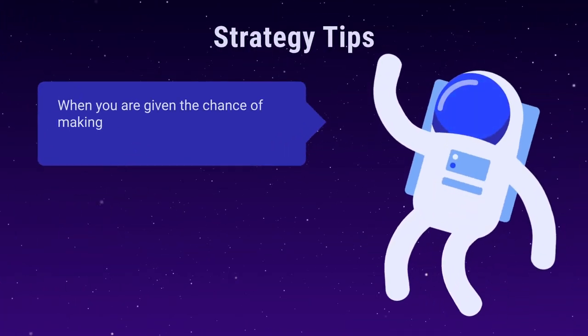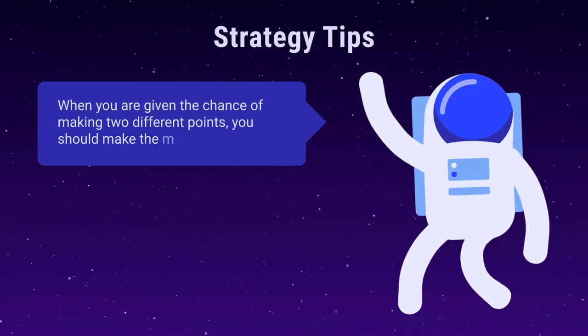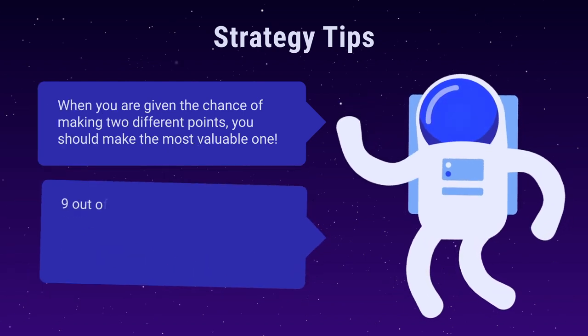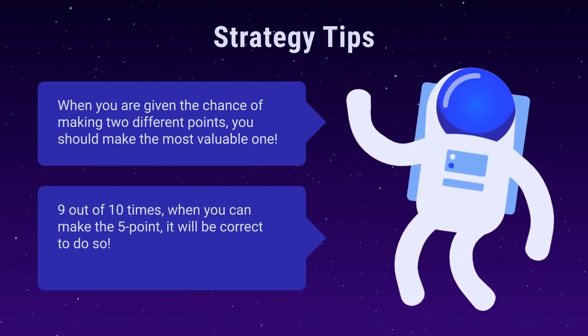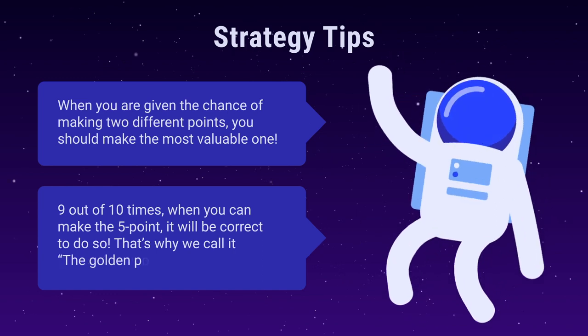When you're given the chance of making two different points, you should make the most valuable one. Nine out of ten times when you can make the five point, it'll be correct to do so. That's why we call it the golden point.